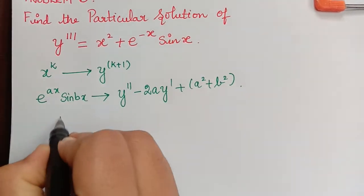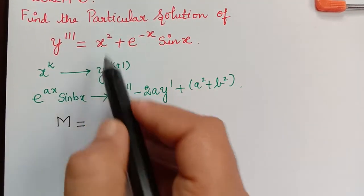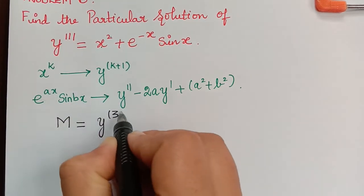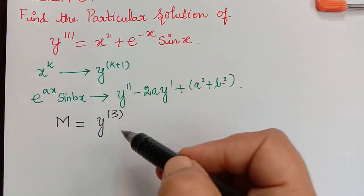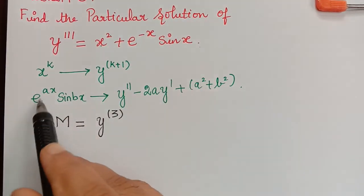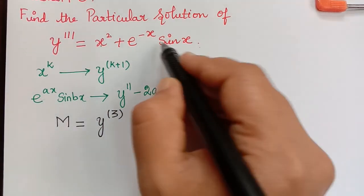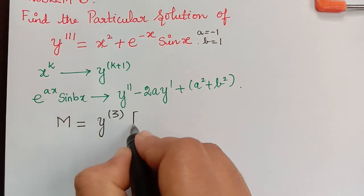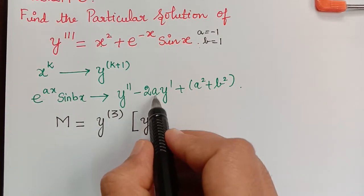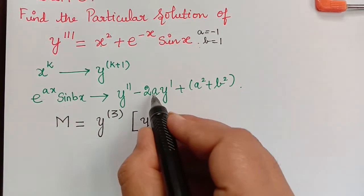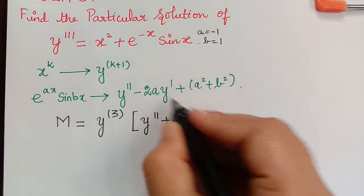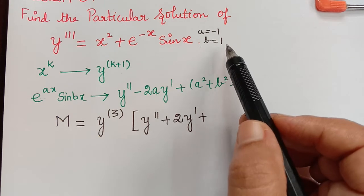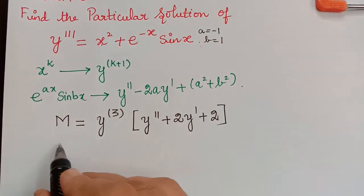The annihilator operator M will be: for x², k=2, so it is y differentiated 2+1 = 3 times. When we have a sum, we take the product of the annihilator operators. For the next function e^(ax)sin(bx), a = -1 and b = 1. Substituting: y'' + 2y' + (a² + b²) = y'' + 2y' + 2. So M = D³(D² + 2D + 2) is the annihilator operator.